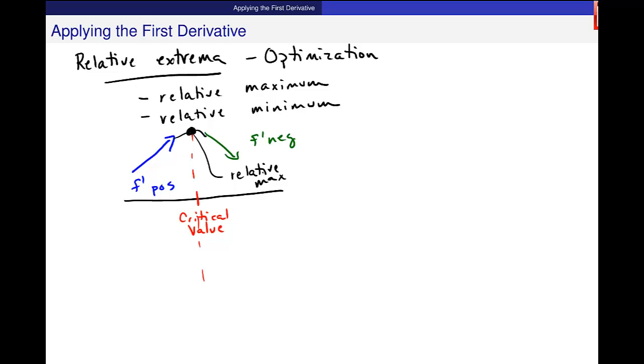And when that happens, when I move from moving up to moving down, I get this idea of a relative max. And this moving up is where f prime is positive on this side and this moving down is where f prime is negative. This is when I expect to see a relative max. This is the official test, first derivative test, for finding a relative maximum.